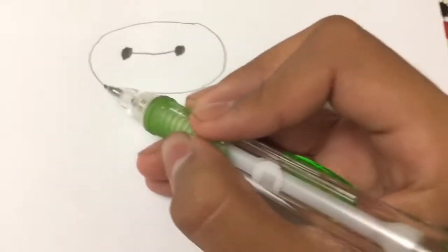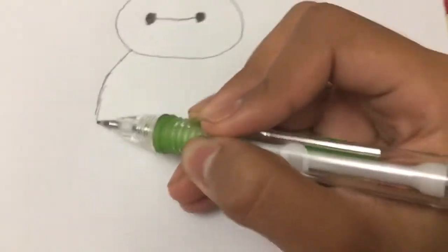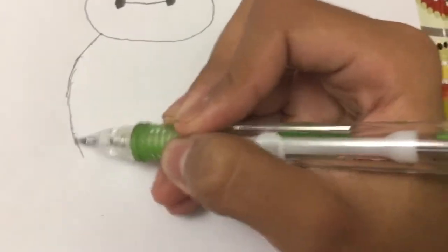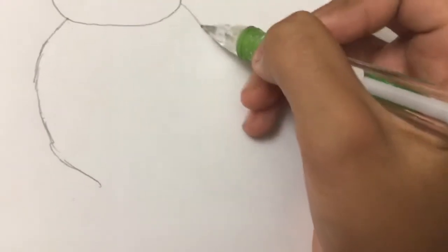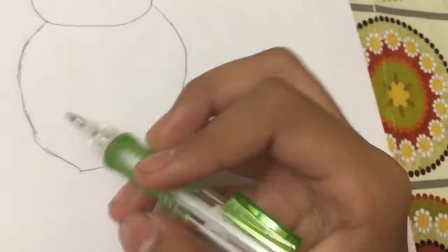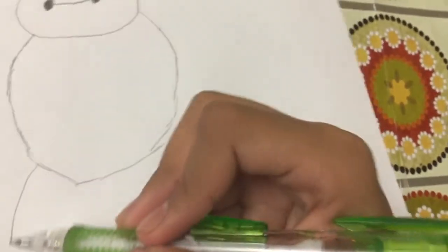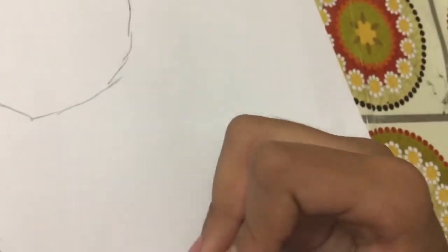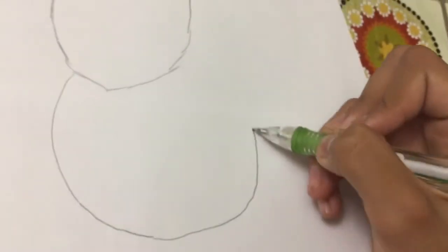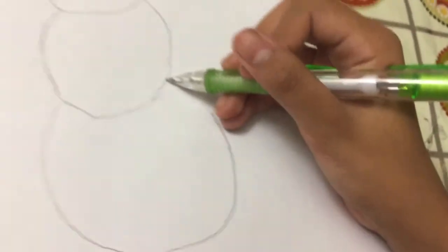Now let's go on to his body. So to make it easier, you can make two circles like this. I'm going to do that, and another big circle, so like a snowman right now.